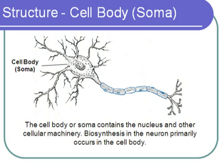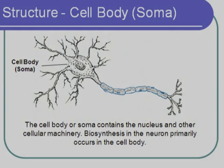The cell body, or soma, is the part of the neuron that is very much like other types of cells. It contains the nucleus and other cellular machinery. In the neuron, biosynthesis — or the synthesis of biological molecules — occurs primarily in the cell body.